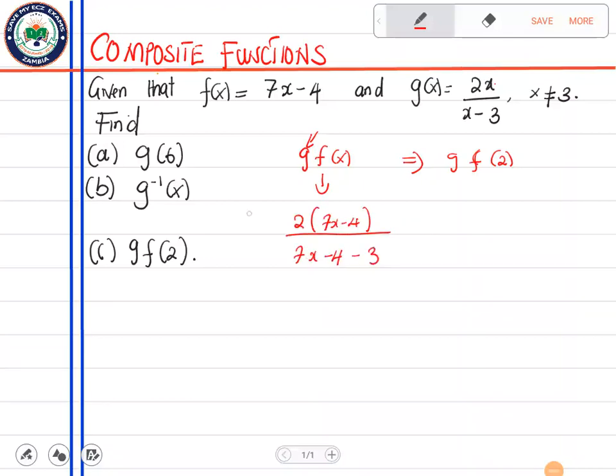Down where there's x we put f. This is what it means by g of f, and this will simplify to 14x minus 8 over 7x minus 7. Now this is g of f of x, all right.